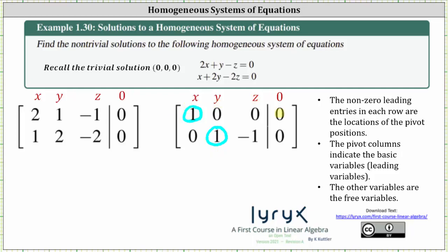From row one, we know that x equals zero. From row two, we know that y − z equals zero. And because z is a free variable, z can be any value, which we indicate by z equals z. We then write the basic variables in terms of the free variable: x equals zero, y equals z, and z equals z.